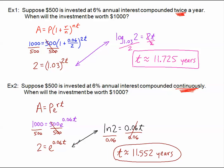Now, if you don't like this conversion, some people might just take the natural log of both sides. But remember that the natural log of E goes away and you'll have the natural log of 2 equals 0.06T, which is exactly what I had converted to anyway.